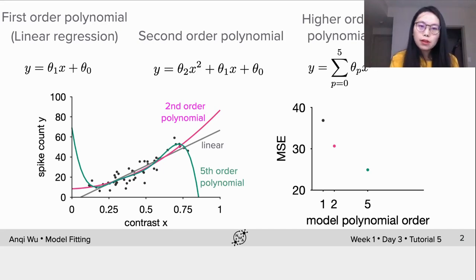We observe that linear model misses a lot of data points, thus its MSE is the highest. But as the polynomial order increases, the curve starts to go through more data points and MSE decreases.